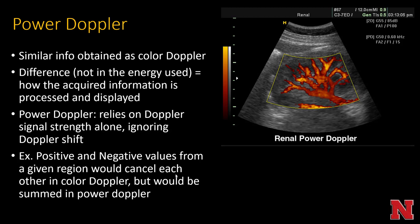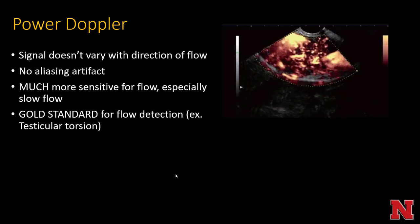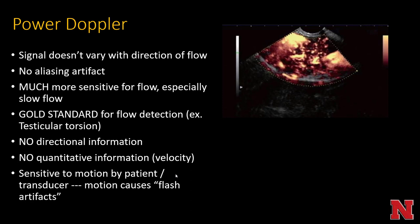Clinically, power Doppler is most commonly used when you simply want to know if there's any flow in an area. The most common example is testicular ultrasound, especially in younger children or infants, where you want to know if there is flow to the testicle to exclude torsion. Power Doppler is considered the gold standard non-invasive imaging for flow detection. It has no aliasing artifact and is much more sensitive, especially for slow flow. Limitations include no directional or quantitative velocity information, and it is very sensitive to flash artifacts.